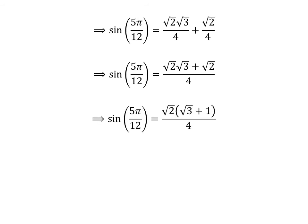Taking out the common factor square root of 2 in the numerator gives us the final answer: sine of 5 times pi upon 12 is equal to square root of 2 times the quantity square root of 3 plus 1, upon 4.